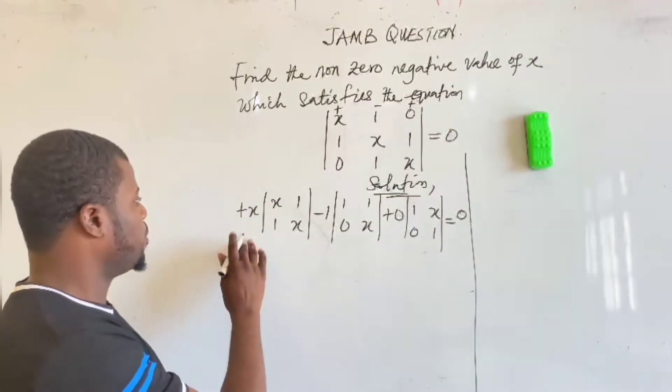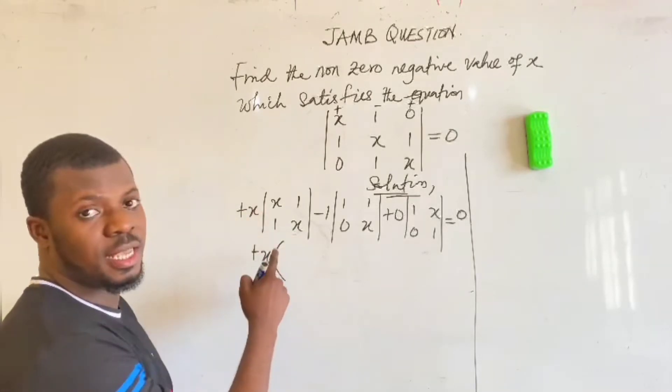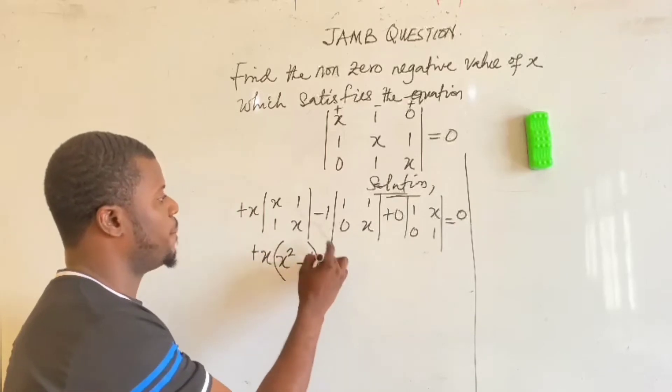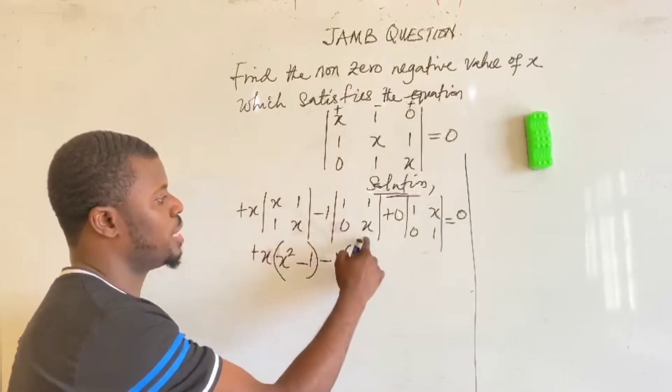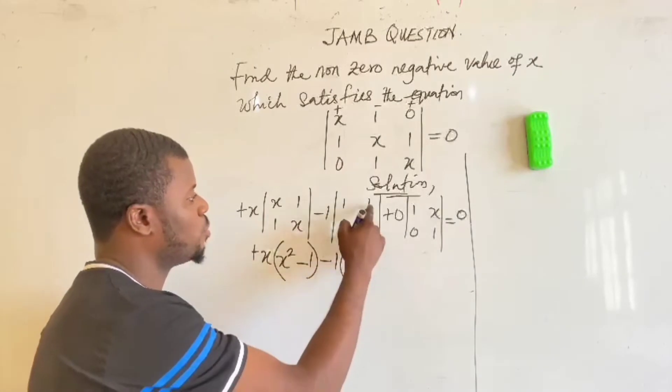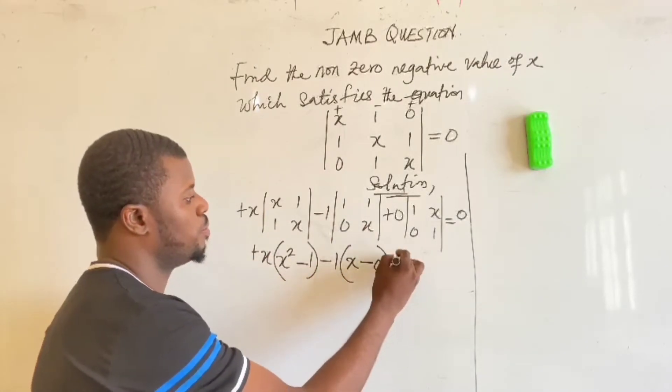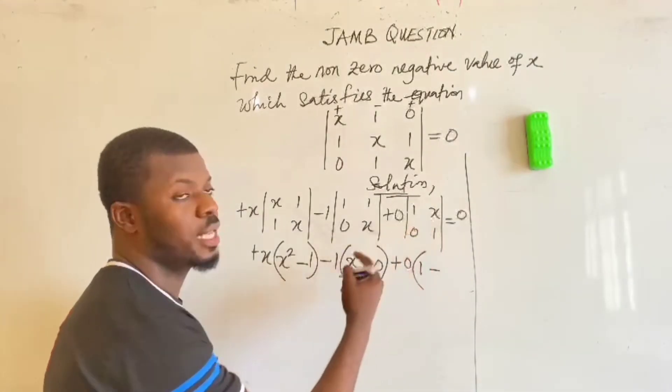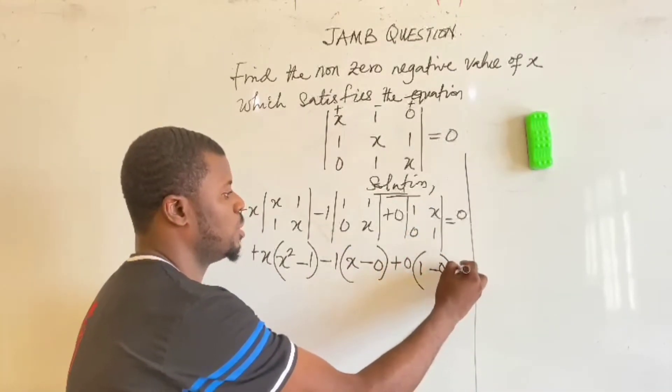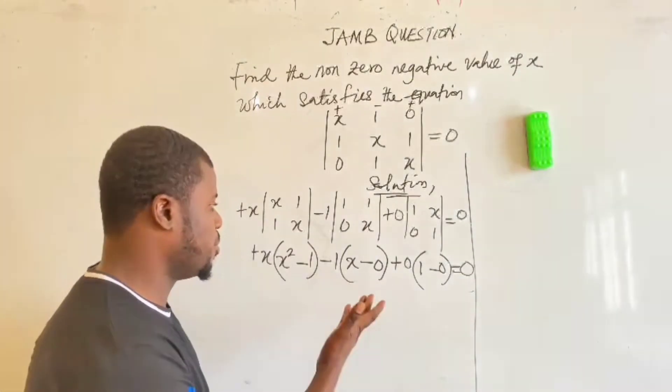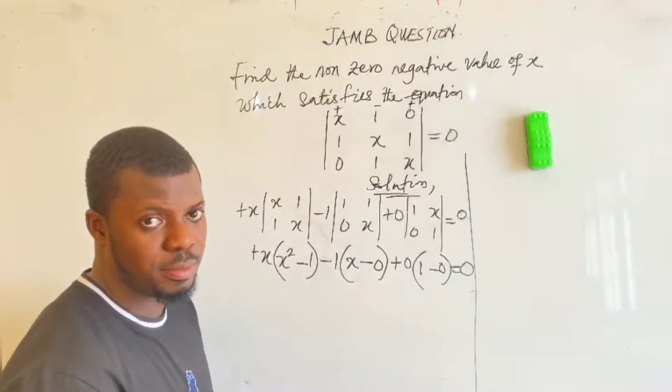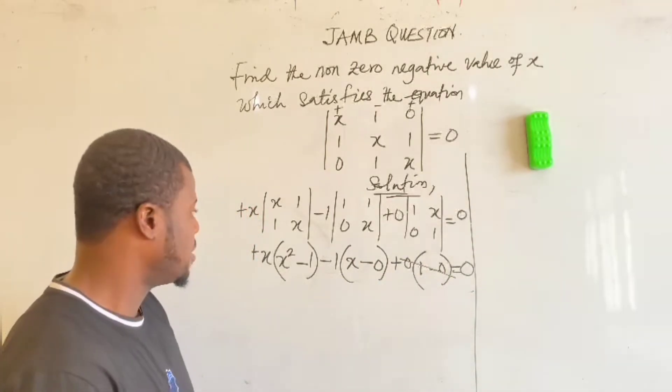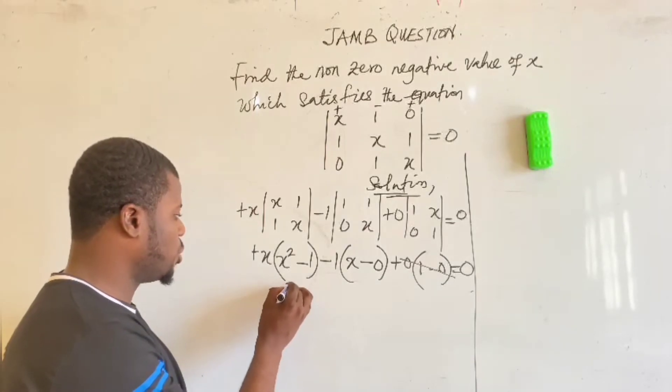Okay, so at this point you have x into x times x, x squared, minus 1 times 1, which is 1. Minus 1 into 1 times x, which is x. And then minus 1 times 0 is 0. Plus 0. 1 times 1 minus x times 0 is 0. So this is very simple. At this point, you can clear. Of course, you know, 0 minus everything in here. We are having x cubed. X times x squared is x cubed.